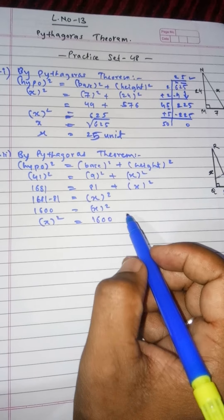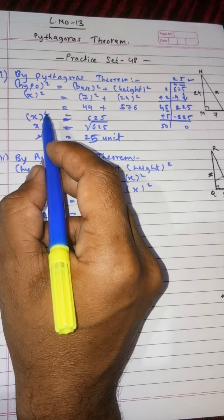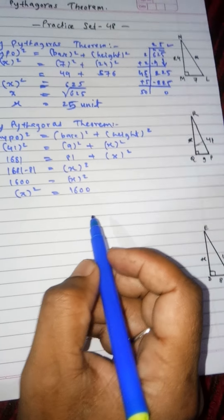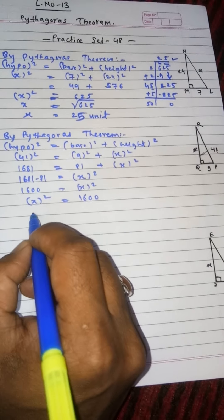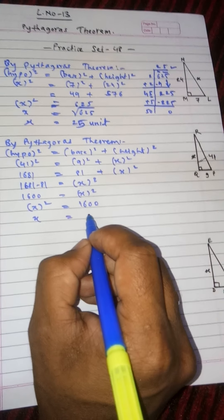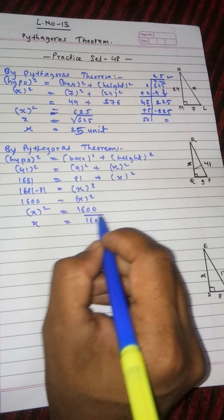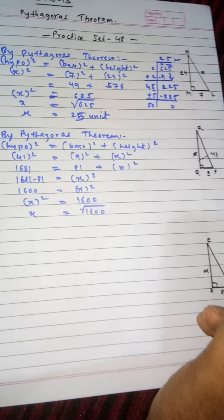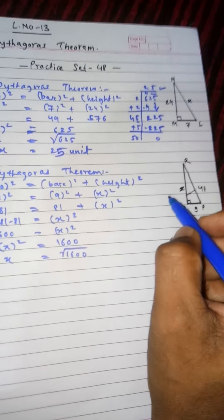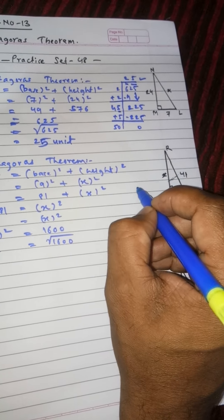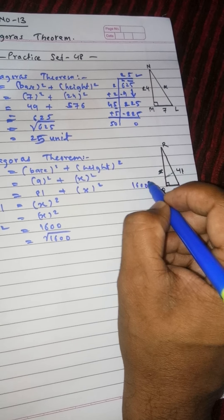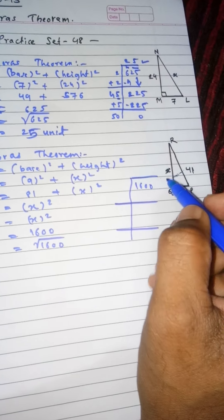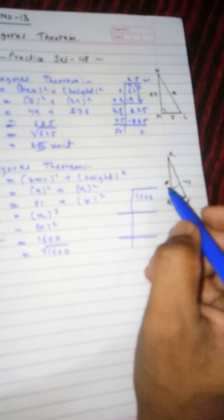Now, same as we are done in the last example, while removing square of x, write there under sign. So same method we will follow. X is equals to, write 1600 here and write the square root sign. Now the same method, see how we will find the square root of 1600.